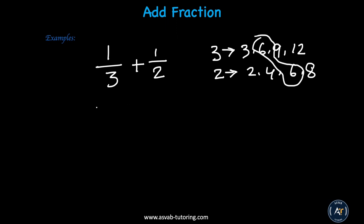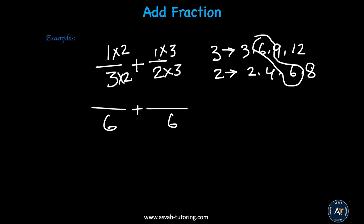So 6 is the common denominator — 6 here and 6 here. The next thing you need to find is the equivalent fraction. What do you need to multiply 3 by to get 6? Multiply by 2, and do the same thing on top. What do you need to multiply 2 by to get 6? Three. So now you have 2 over 6 plus 3 over 6. Add only the top numbers: that gives you 5 out of 6.